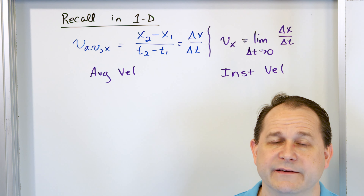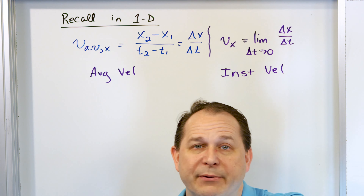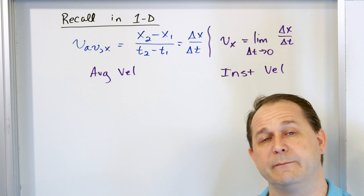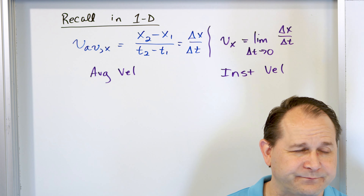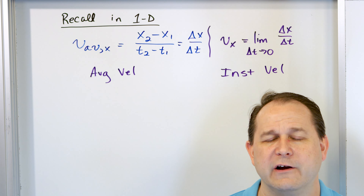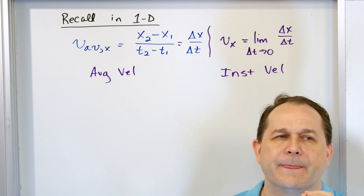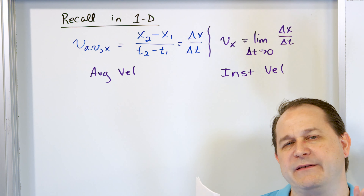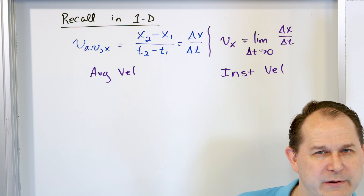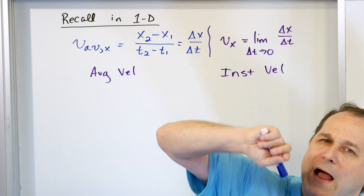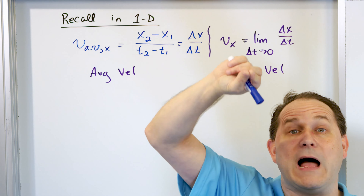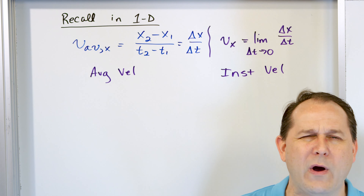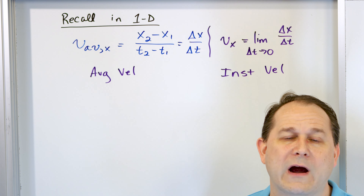Now we're going to generalize these ideas to when the motion is not in one dimension — what happens when the motion takes a curved path through space, two-dimensional space or even three-dimensional space. The punch line is that you can always consider any motion through space as one single motion, like a curved path, but you can also break it up into components — vector components: the x component of the motion along the x direction, and the y component of the motion along the vertical direction.